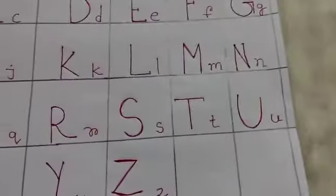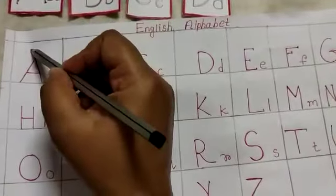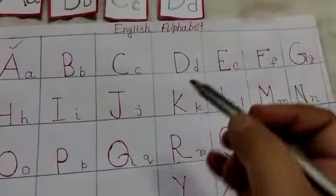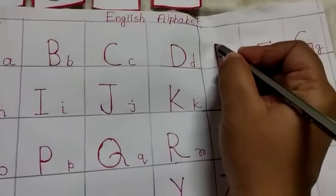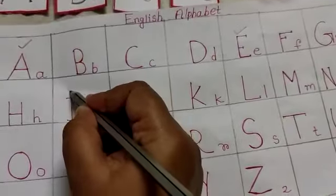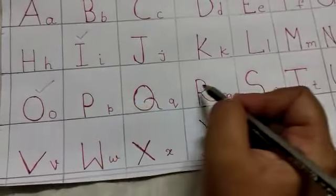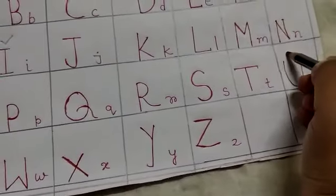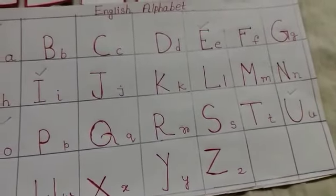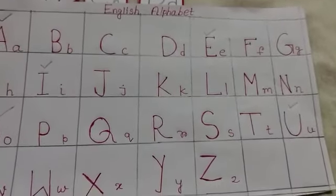So students, search vowels from these letters. Yes, A, E, I, O, U. These are called vowels. Vowels.